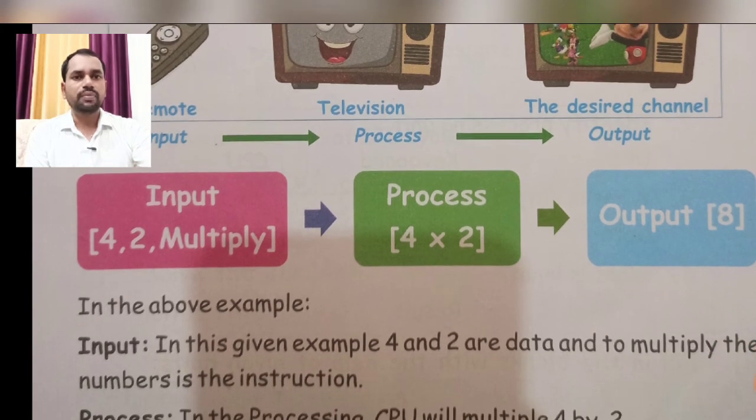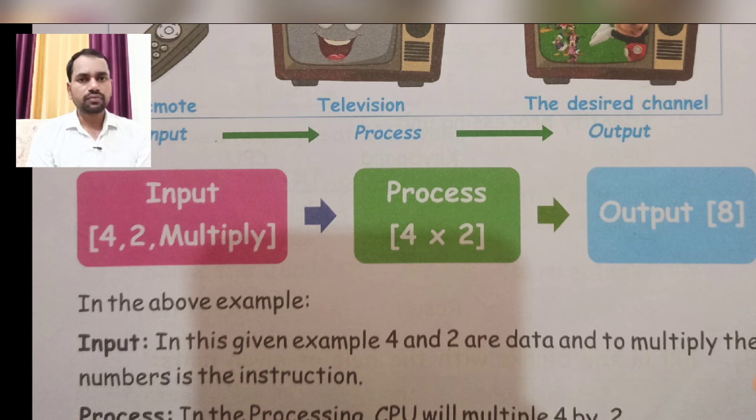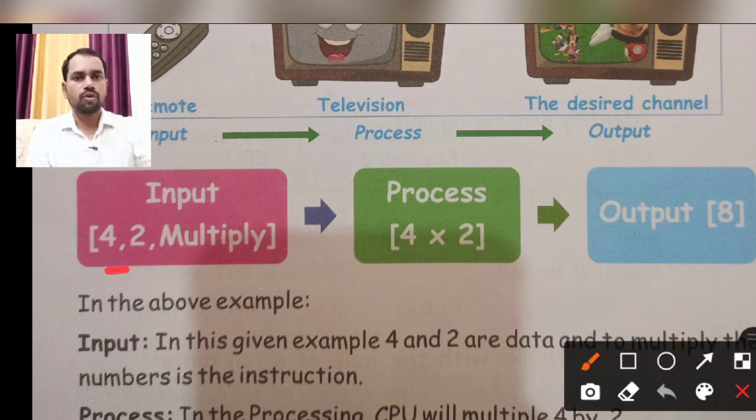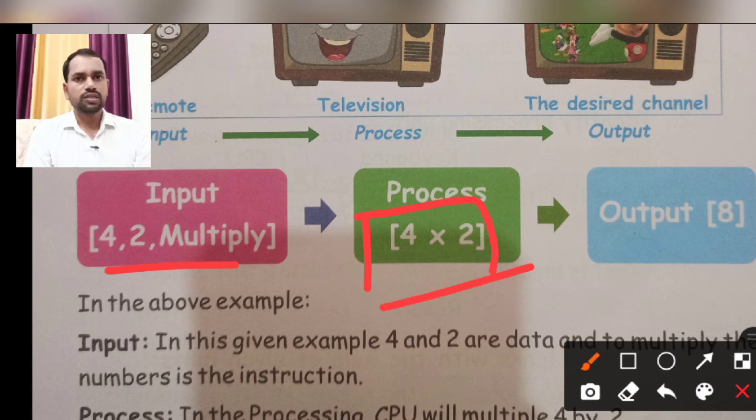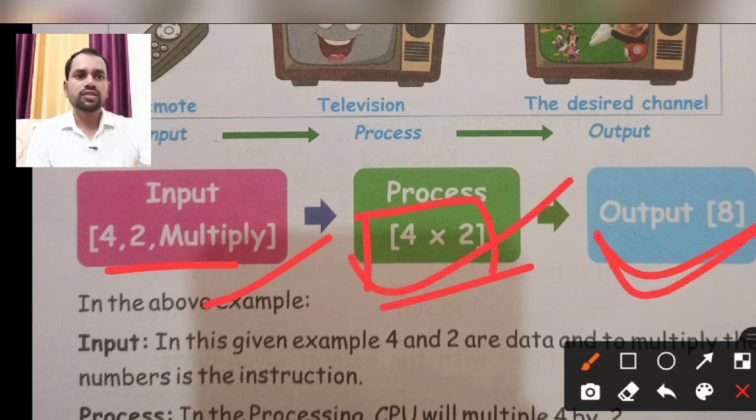Now student, input-process-output in mathematics. Input we have given 4, 2, multiply. Means 4 and 2 are our values to multiply. Processing means 4 multiply by 2 through CPU. Then output is 8. This is the input given to keyboard, processing through CPU, output shown on screen.